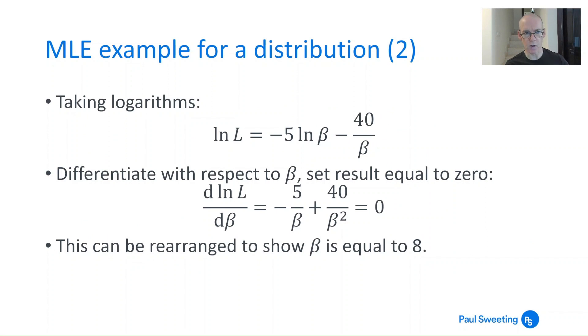If you take logs, it gets much easier—the log of that likelihood function becomes -5 log β - 40/β. You can then differentiate that with respect to β, set the result equal to 0, and rearrange to show that β = 8. So β = 8 gives you the most likely parameter value that would fit with those observations.